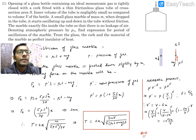A small glass marble of mass M is then dropped in the tube. It starts oscillating up and down in the tube without friction. The marble exactly fits inside the tube so that there is no leakage of air. Denoting atmospheric pressure by P0, find the expression for the period of oscillations of the marble. Treat the glass, cork, and the material of the marble as perfectly insulator of heat.